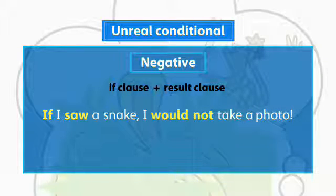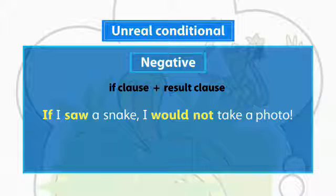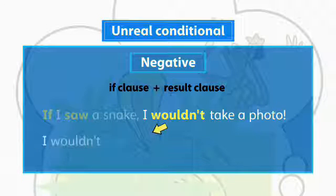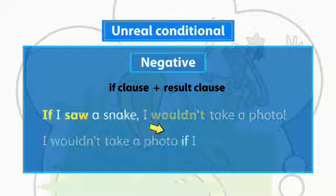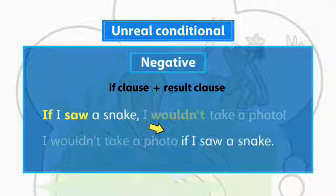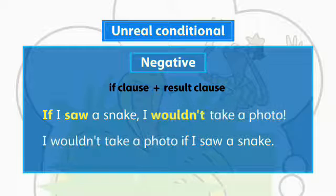The negative of WOULD is WOULD NOT. We can contract WOULD NOT to WOULDN'T. We put the IF clause before or after the RESULT clause.